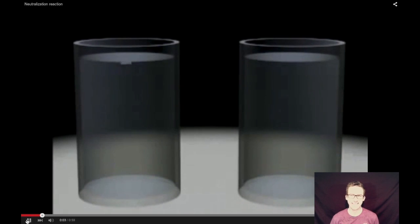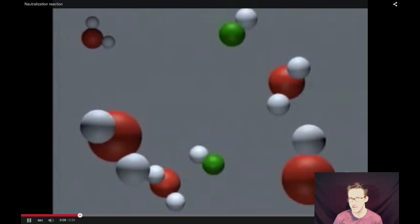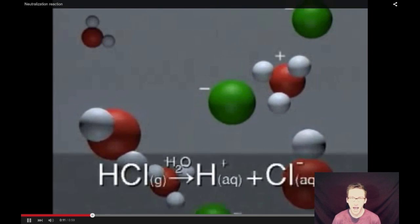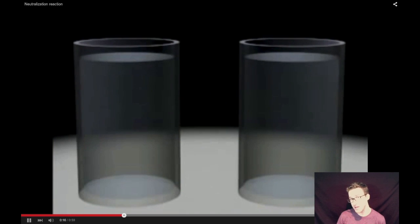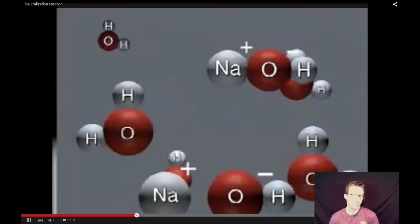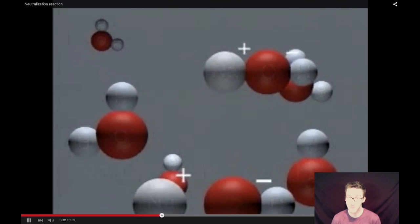So let's take a look at this thriller of a video. In one beaker, we have hydrochloric acid, a strong acid, which is going to have an abundance of hydrogen ions or hydronium ions. In our second beaker, we've got a thrilling beaker of sodium hydroxide, which is a strong base,